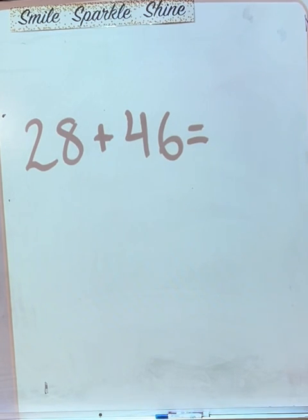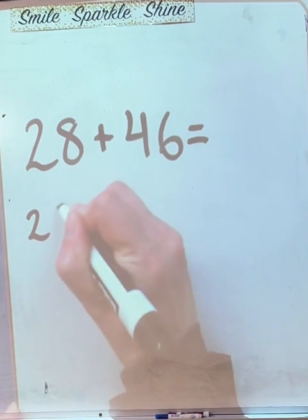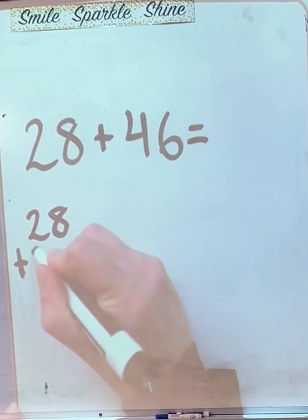What is the first step when we're doing expanded form? We have to rewrite the equation. So here I'm going to write it: 28 plus 46.